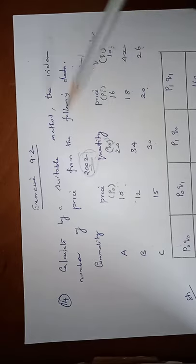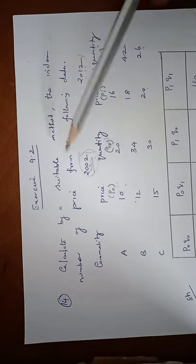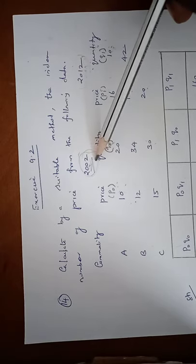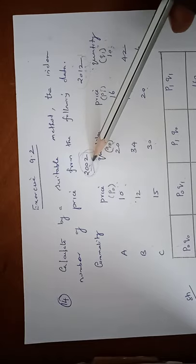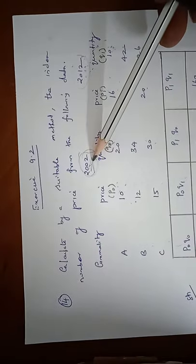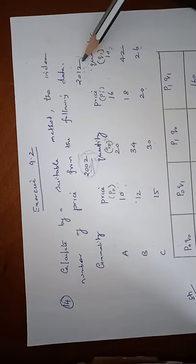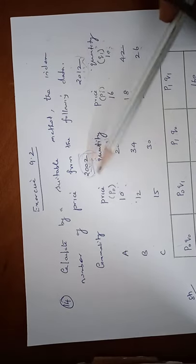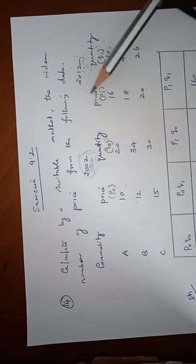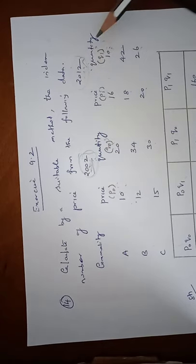So in this problem we have to take two years. First year is 2002, next year is 2012. So 2002 is a base year and 2012 is a current year. So 2002 is a base year price and base year quantity and current year price and current year quantity.